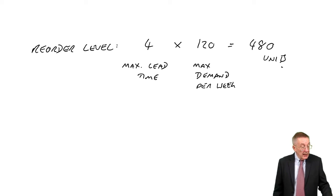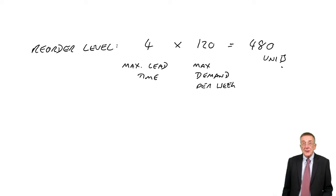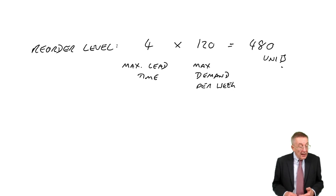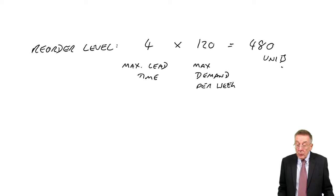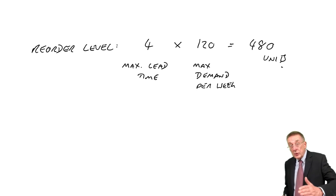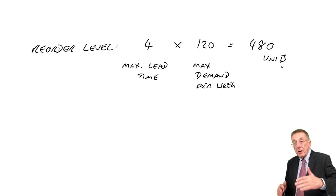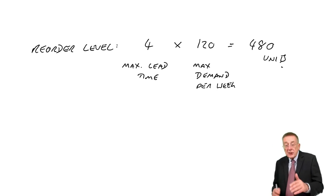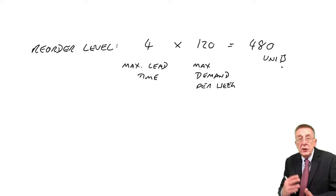So although I ordered when I'd 480 left, we wouldn't actually need them all. And equally, the demand per week, the worst can happen is it's 120, but some weeks it might only be 70. And so either way around, there will be times when we've placed an order when we 480 left, but didn't need up to use them all, so there were still some of them left when the new order arrived.